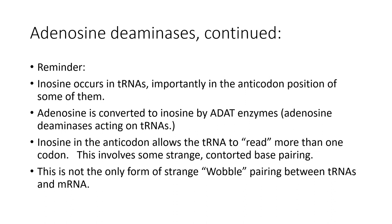Inosine also occurs in tRNAs, though this is distinct from mRNA editing. Inosine appears at anticodon positions and elsewhere in some tRNAs; the enzymes that modify adenosine in that setting are ADATs — adenosine deaminases acting on tRNA. This modification allows a particular tRNA to read more than one codon, contributing to wobble pairing between codon and anticodon. For example, in a glycine tRNA, adenosine at the wobble position is replaced by inosine, allowing that tRNA to read three different glycine codons because inosine can pair with uracil, cytosine, or adenine.